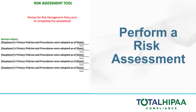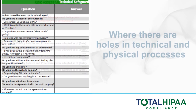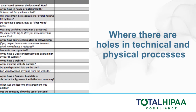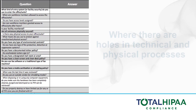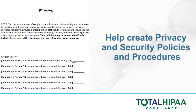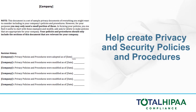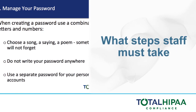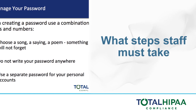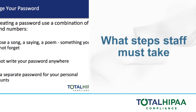Your first step in this process is to perform a risk assessment. This document will show you where you have holes in your technical and physical processes, and will help you create the required privacy and security policies and procedures. These document how you protect all PHI you come in contact with, and what steps staff must also take to protect this information.